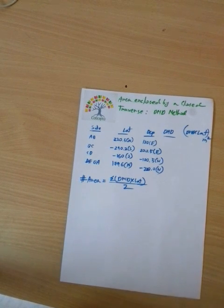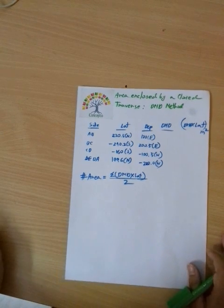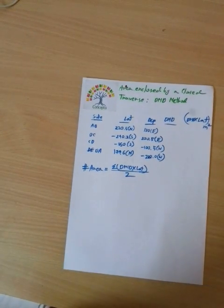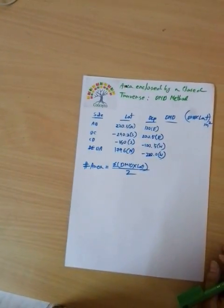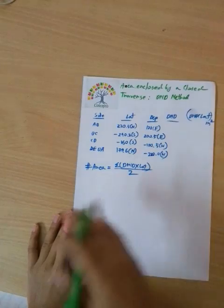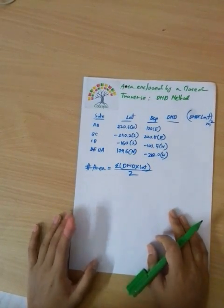Hello everyone, welcome to our concept video tutorial. Today we are going to calculate the Closed Traverse and Closed Area. We are going to calculate using the DMD method and the Coordinate method, so the method is going to change and the answer will be two different things.